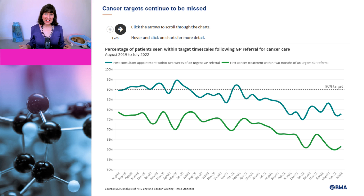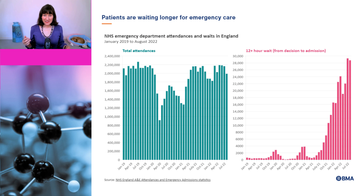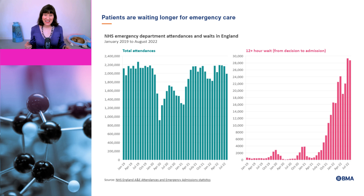The next chart looks at the percentage of patients seen within the target timescales following GP referral for cancer care, and again we see that the proportion of patients meeting the targets is much lower than before the pandemic. Whether or not you survive cancer is very dependent on how quickly treatment begins. The final chart looks at NHS emergency department attendances and waits in England. The chart on the right shows the number of people who have had to wait more than 12 hours from when a decision was made to admit them to when they were actually admitted, and the numbers have exploded in 2022. This is particularly concerning because it has been shown that increased waiting times lead to increased mortality.